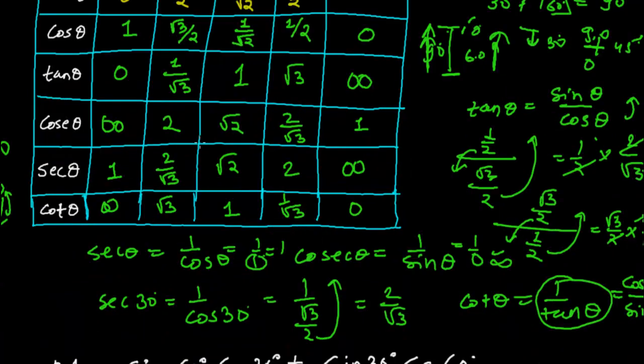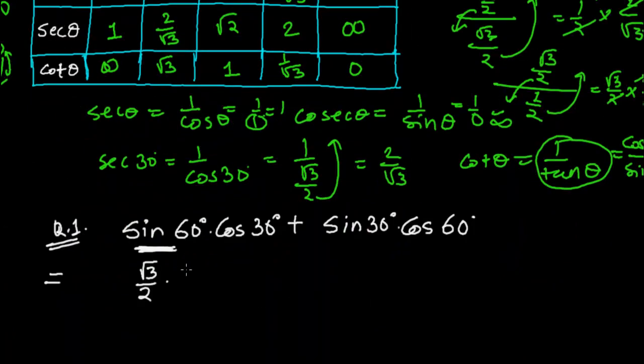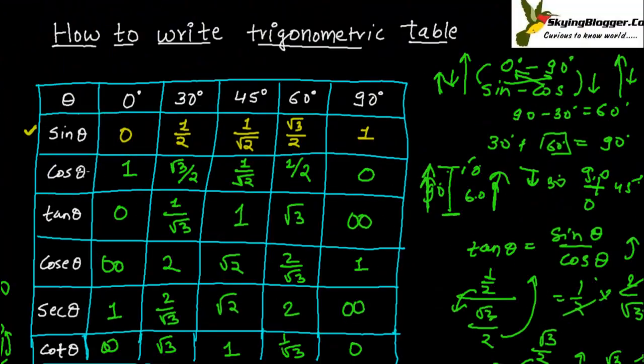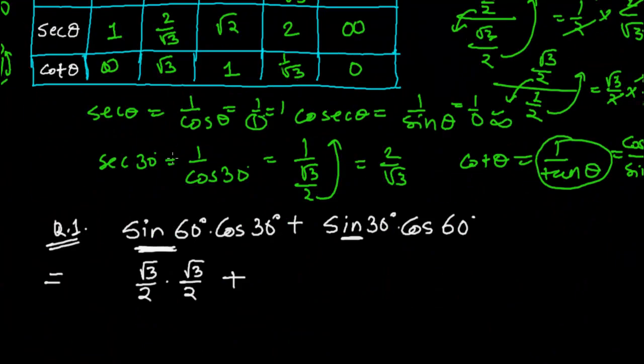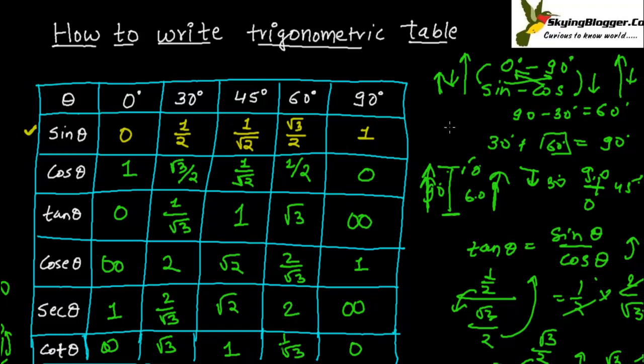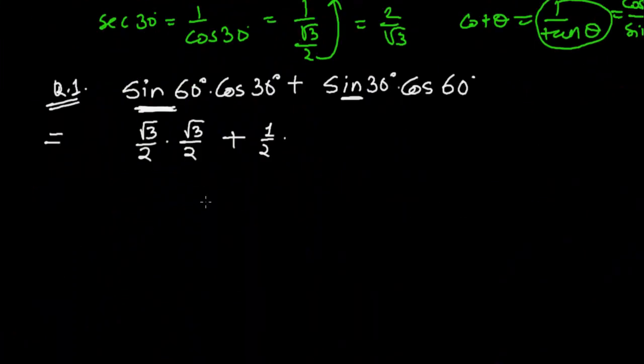Plus sine 30 times cos 60. Let me find the value of sine 30 - sine 30 is half, so let me write here half. This half times cos 60. What's the value of cos 60? It's half again. The value of sine 60 and cos 30 is the same, and the value of sine 30 and cos 60 is the same.